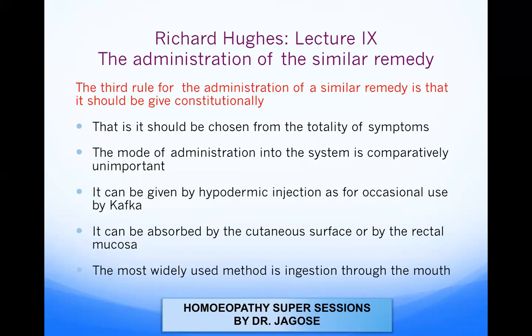The third rule is that the remedy should be given constitutionally — chosen from the totality of symptoms. The mode of administration into the system is comparatively unimportant. It can be given by hypodermic injection as advocated for occasional use by Kafka, absorbed by the cutaneous surface, or by the rectal mucosa. However, the most widely used and commonly employed method is the oral route.